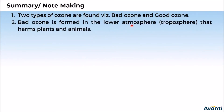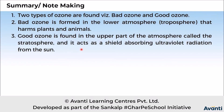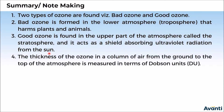Bad ozone is formed in the lower atmosphere, the troposphere, and it harms plants and animals. Good ozone is found in the upper part of the atmosphere called the stratosphere, and it acts as a shield absorbing the ultraviolet radiation coming from the sun.